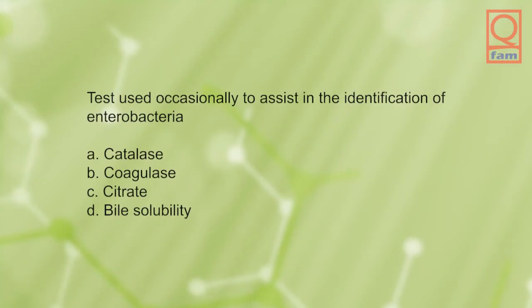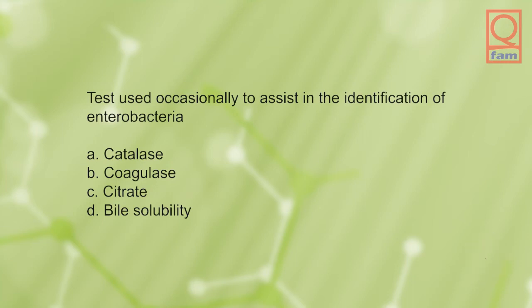Test used occasionally to assist in the identification of enterobacteria: A) catalase, B) coagulase, C) citrate, D) bile solubility. The answer is C, citrate.